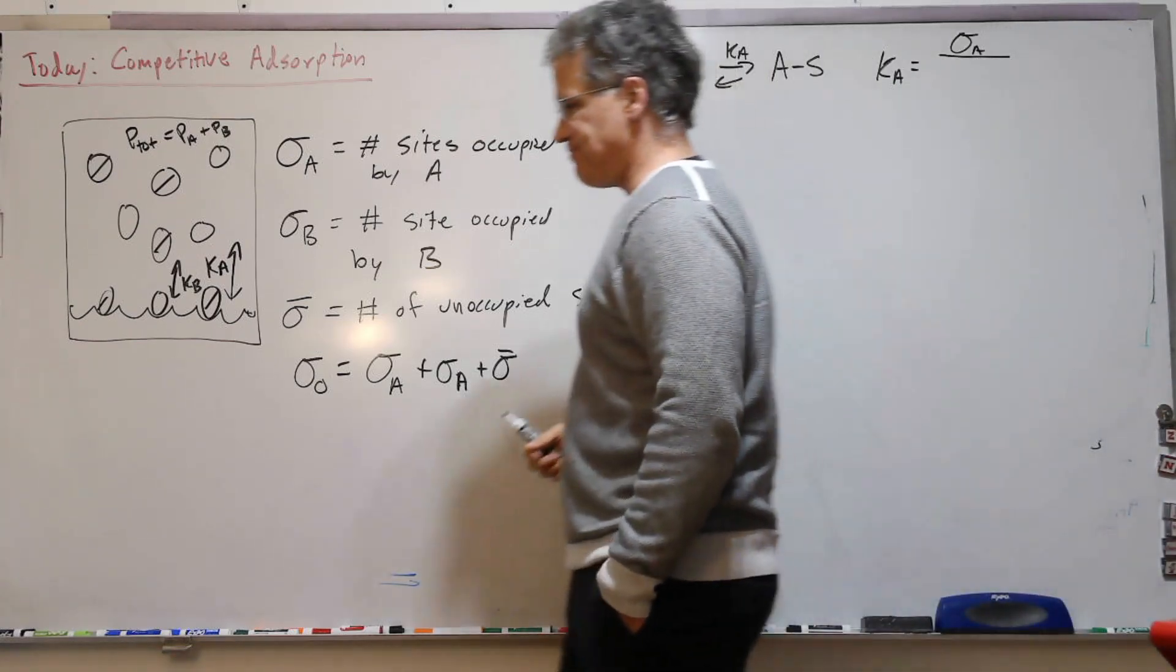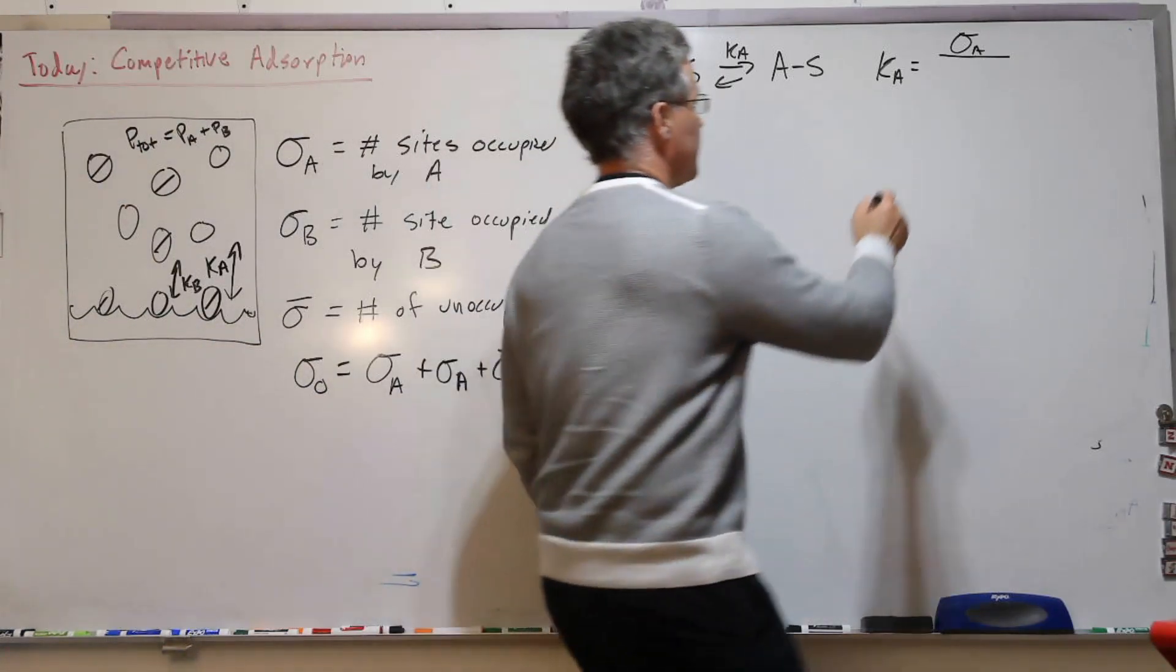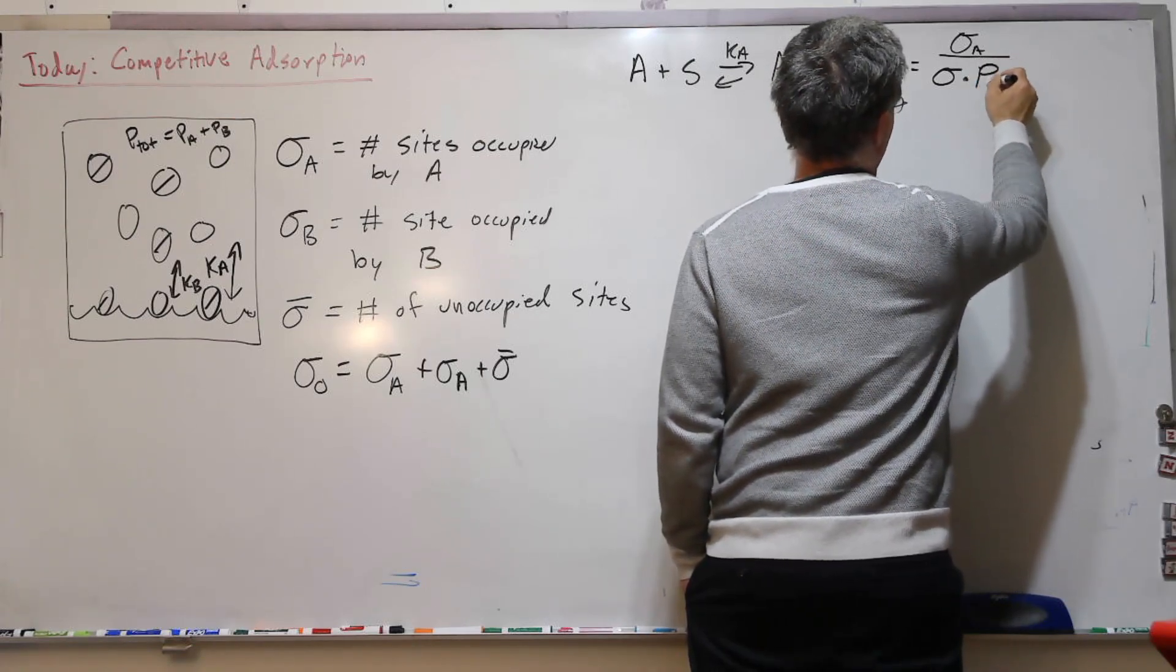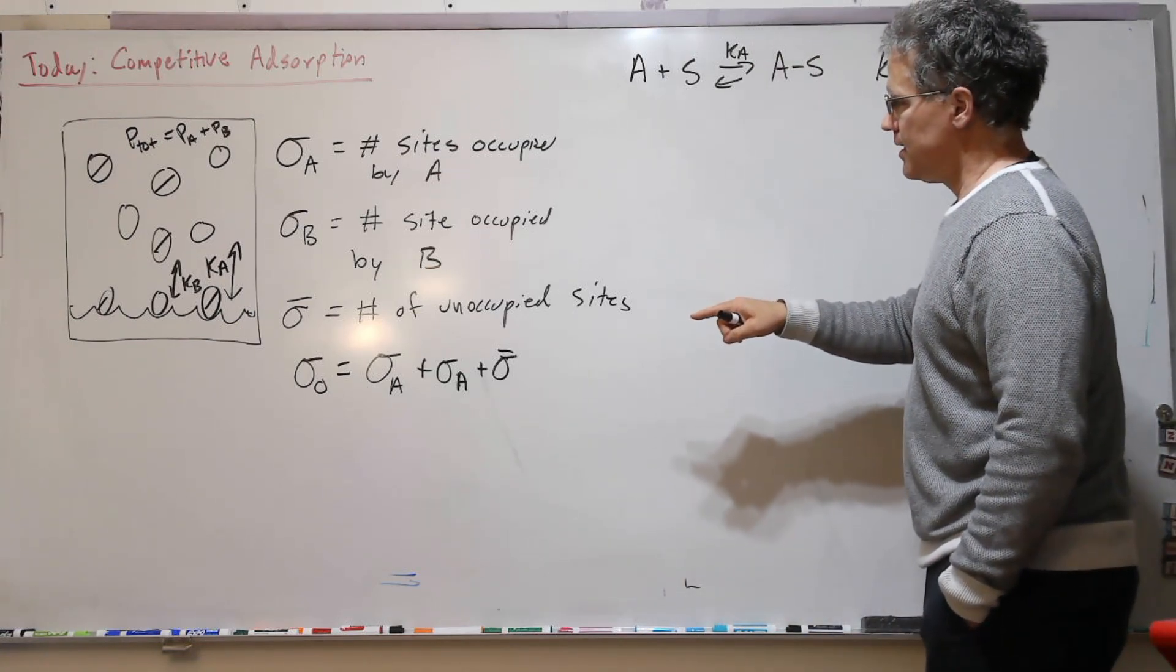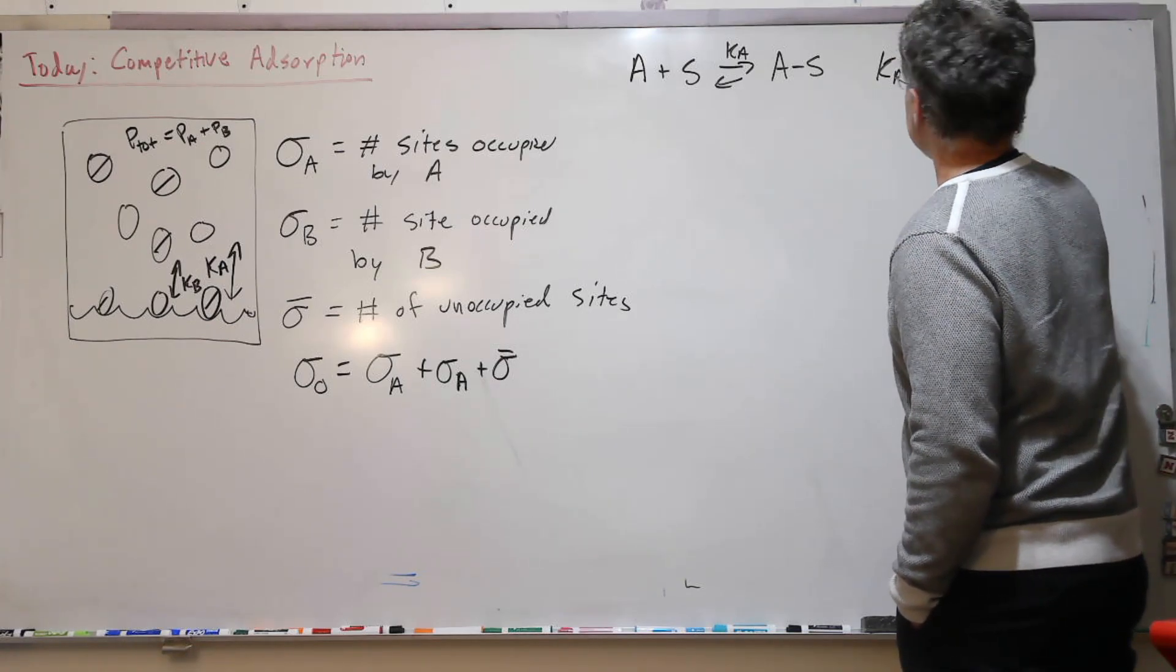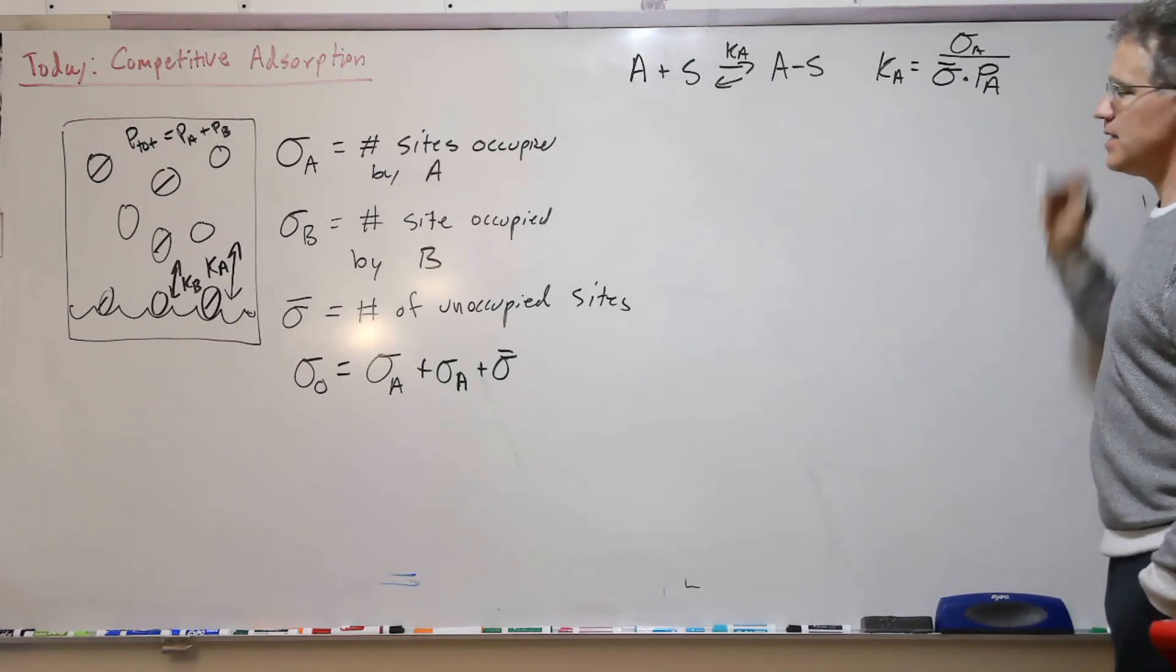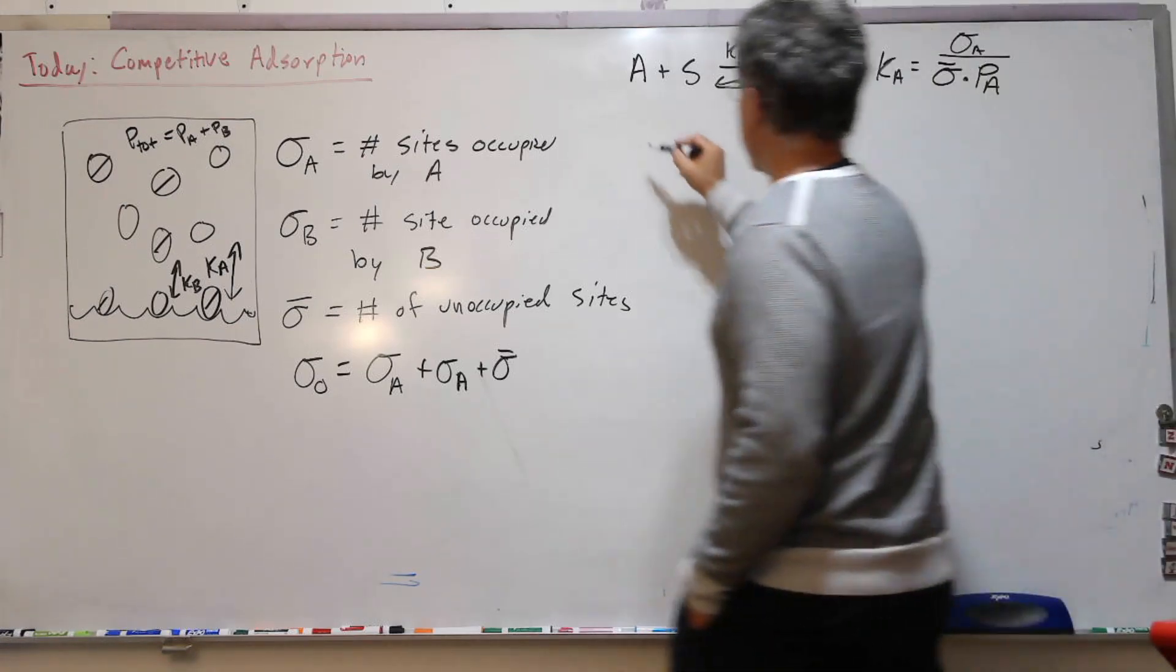Product which is the occupied by A over the sigma bar, unoccupied site. So this is unoccupied A, so here's our unoccupied sites, partial pressure of A, and the occupied sites. And likewise for B.